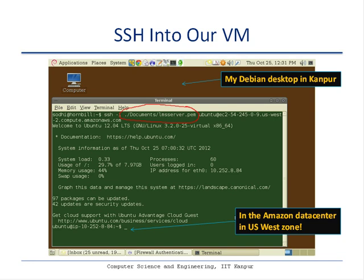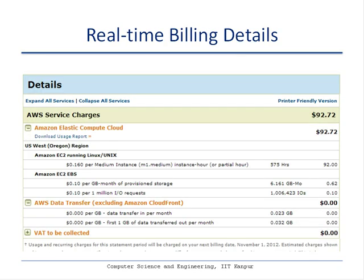You can now see this is a shell prompt in my virtual machine. To check resource usage, you can go to the billing section of your account at Amazon to see how many resources you have consumed and how much it has cost. In my case, I used a medium instance on the US West region for 575 hours, and it shows the corresponding charges.